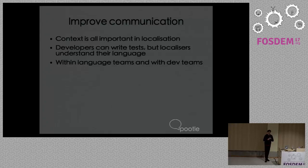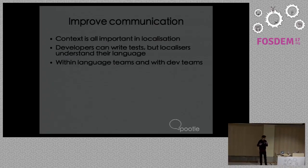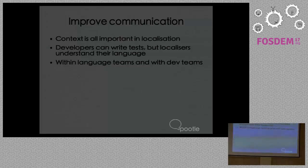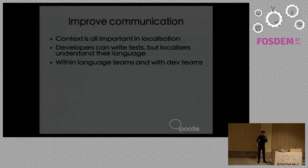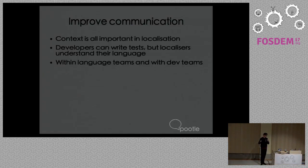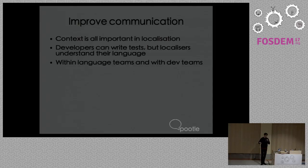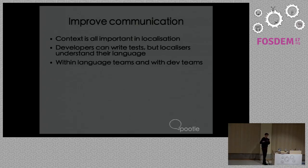Another key aspect is improving communication for localizers. One of the most challenging parts of their job is getting context for what a string is used for — the same words can mean quite different things in different contexts, and that takes up a large amount of translators' time. We'd like to improve the communication flow between developers and translators. There's also a lot within a language team that could be improved — checks developed are often specific to one language but frequently work with others. So we're looking at increasing communication within language teams, between language teams, and between language teams and developers.